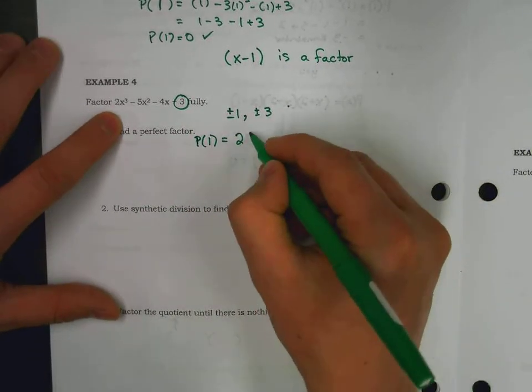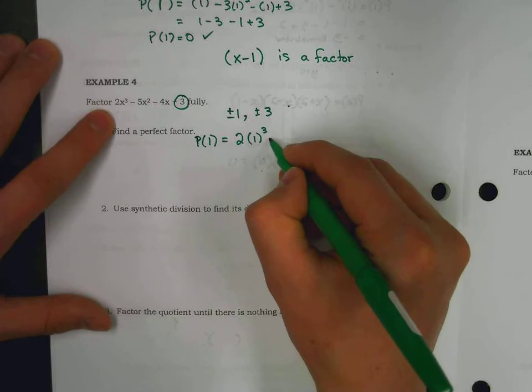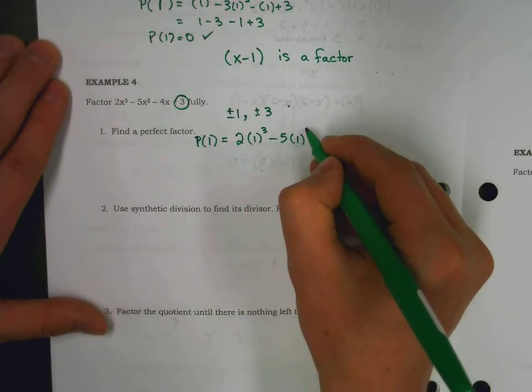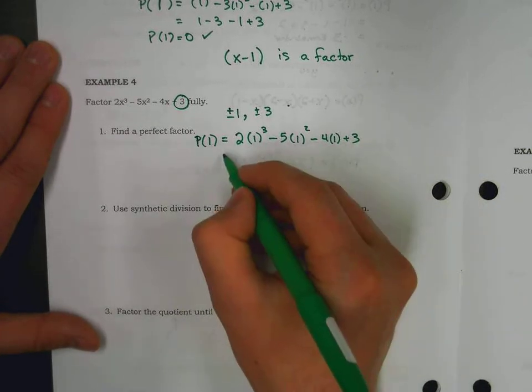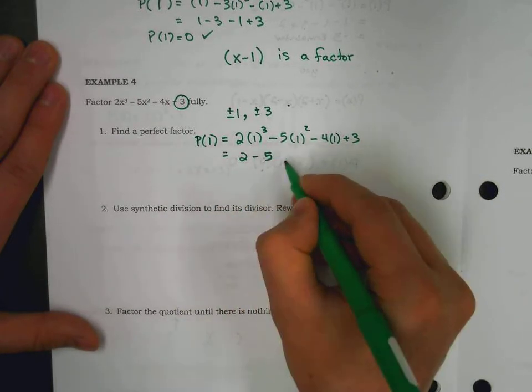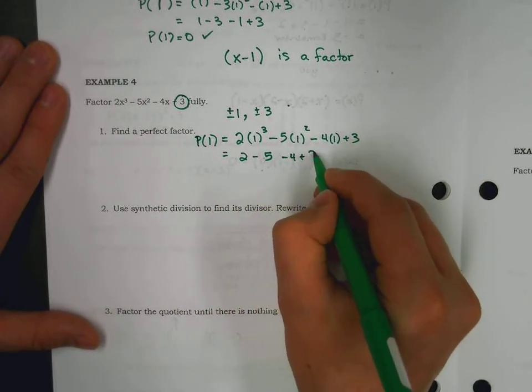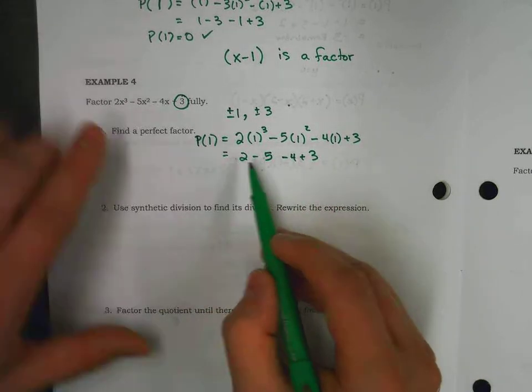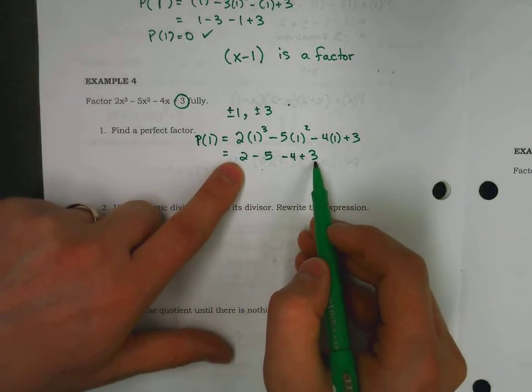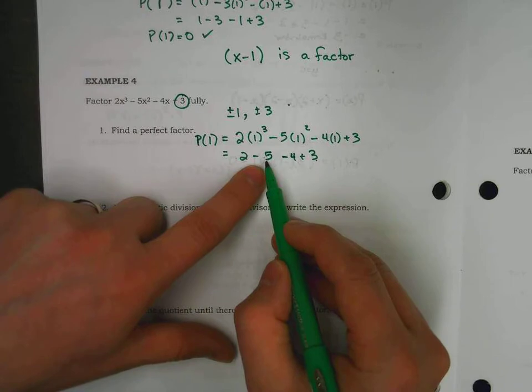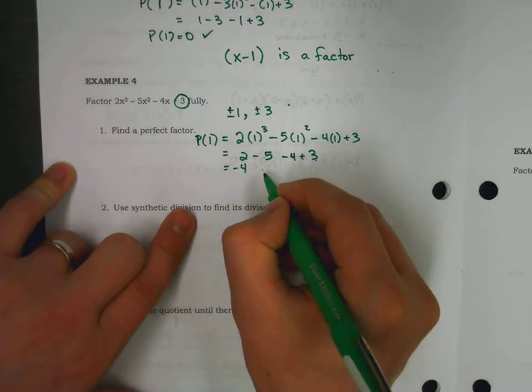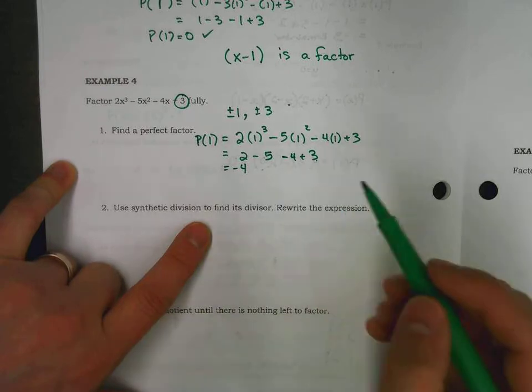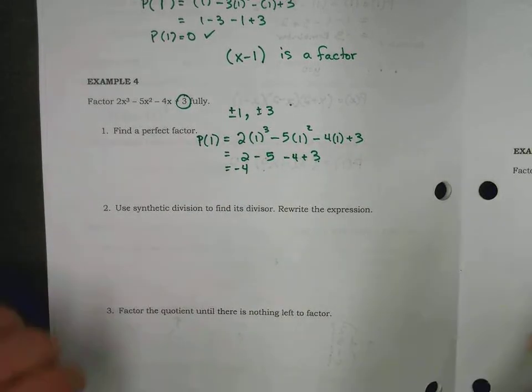We have 2 times 1 cubed minus 5 times 1 squared minus 4 times 1 plus 3. Fingers crossed again, 2 minus 5 minus 4 plus 3. I'm seeing a 2 and a 3. That's a positive 5. Positive 5 and a negative 5 wipes out. So, we're left with a negative 4. That's no good. So, I know that x equals one is not going to help us out. Let's try another one.